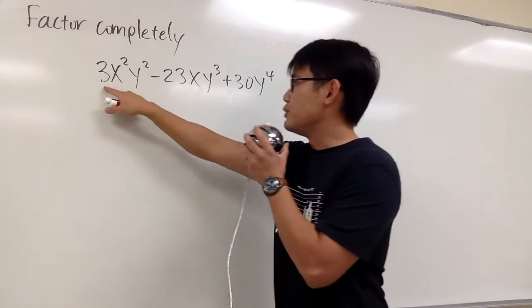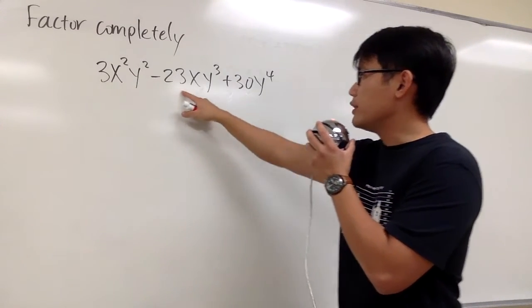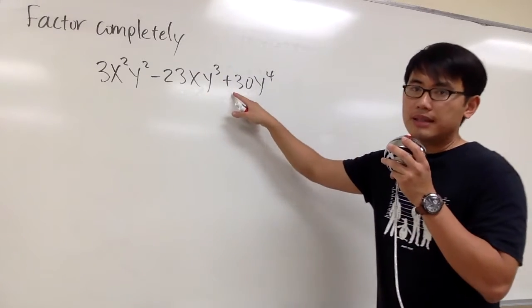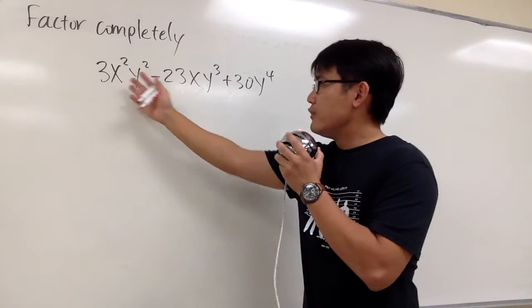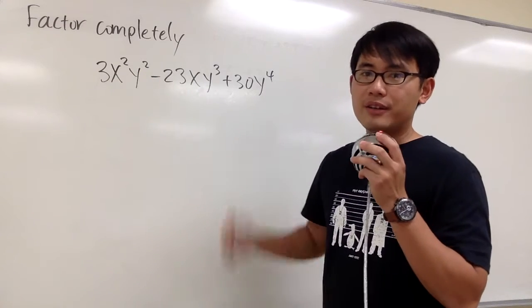We are going to factor this out. We have 3x²y² - 23xy³ + 30y⁴. As usual, we'll see if there's any common factor that we can factor out first.